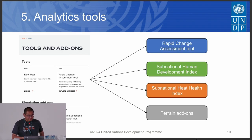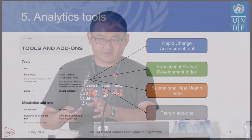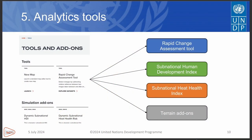We also have analytical tools developed. Currently we have four types: the first is a rapid change assessment tool, the second is a sub-national human development index simulation tool, the third is a sub-national heat health index simulation tool, and the last is terrain add-ons. Users can transform a raster digital elevation model dataset into hillshade layers, contour layers, or Terrain RGB layers dynamically.